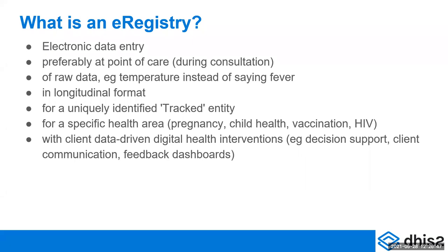What we do for e-registry is you enter the raw data — whether it's temperature or blood pressure or whatever — and then the system will say this person has fever according to the guidelines of your particular context. In longitudinal formats, we are following a uniquely identified tracked entity longitudinally, so the data is structured so that we can see every visit that person has gone to, and it's all linked.